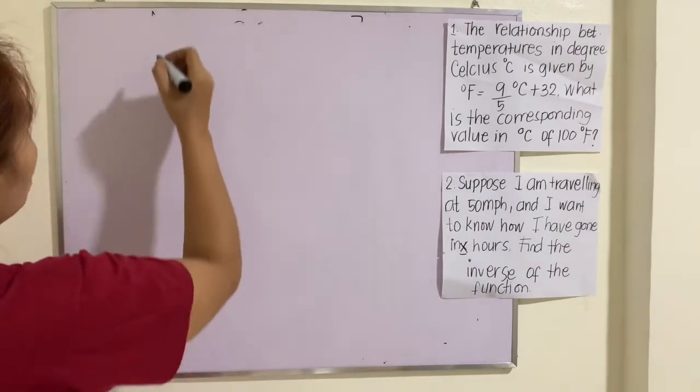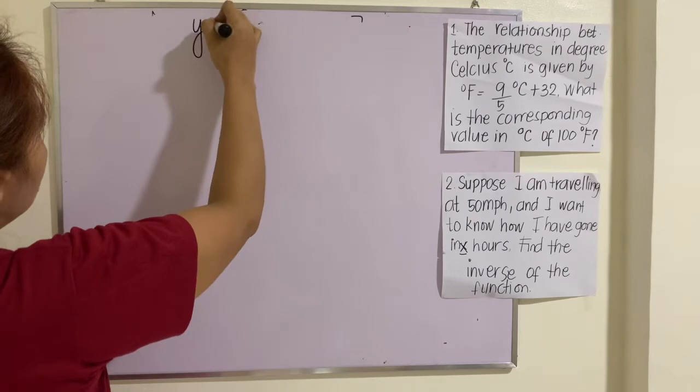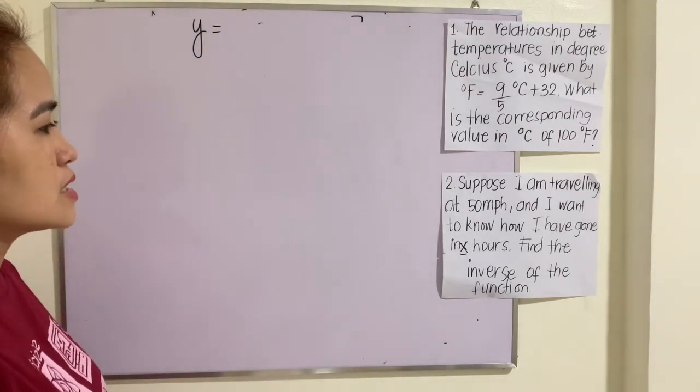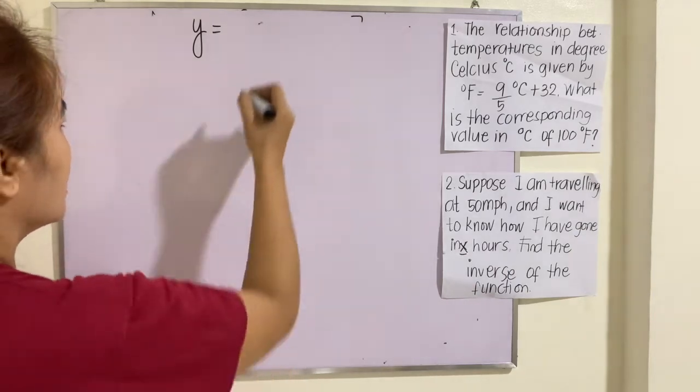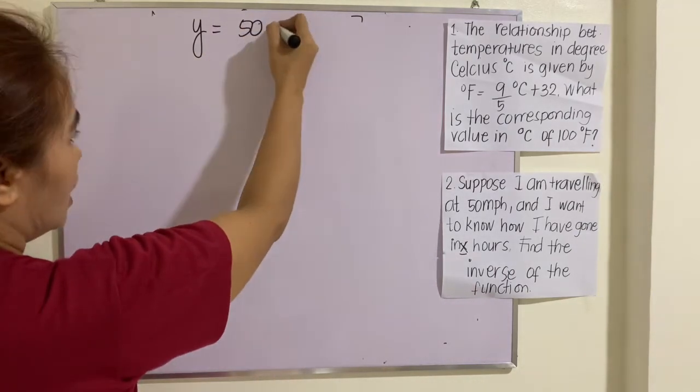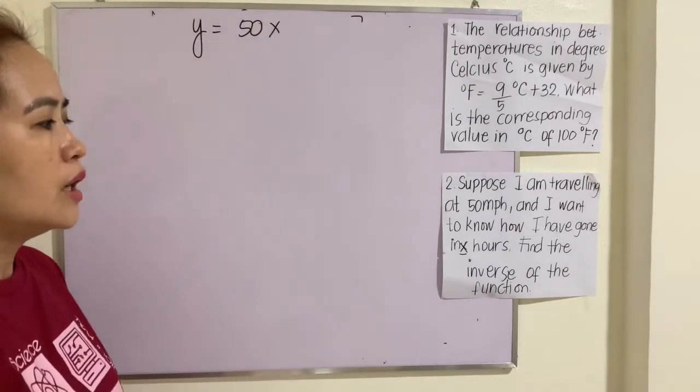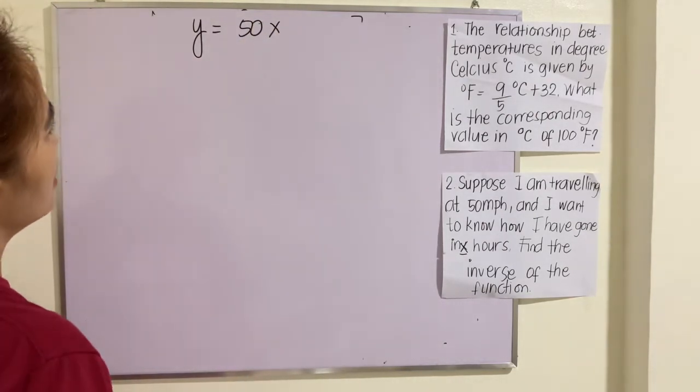We know that the distance formula is rate times time. The rate is 50, and the time is X. So we are asked to find the inverse of this.